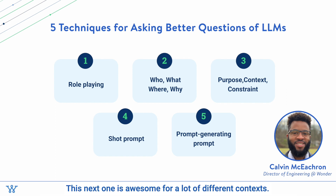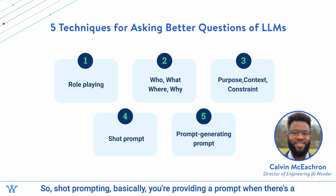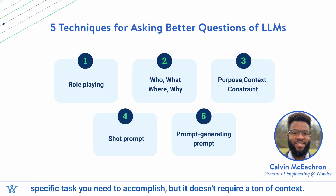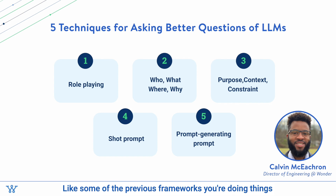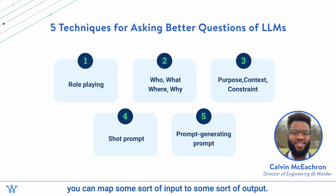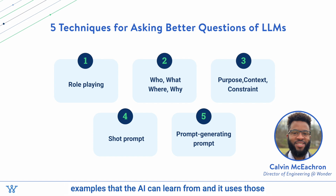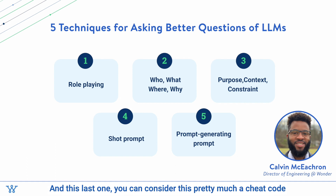The next one is awesome for a lot of different contexts: shot prompting. Basically, you're providing a prompt for a specific task you need to accomplish, but it doesn't require a ton of context like some of the previous frameworks. You're doing things like data gathering, transforming things, or cases where you can map some sort of input to some sort of output. Shot prompting is a technique where you provide examples that the AI can learn from, and it uses those examples to generate responses to your prompt.